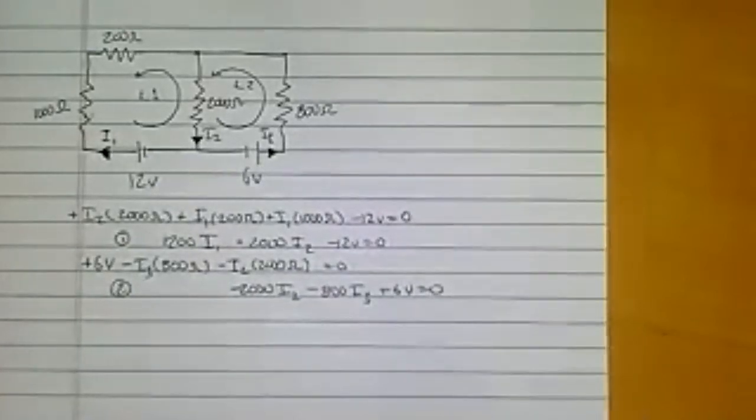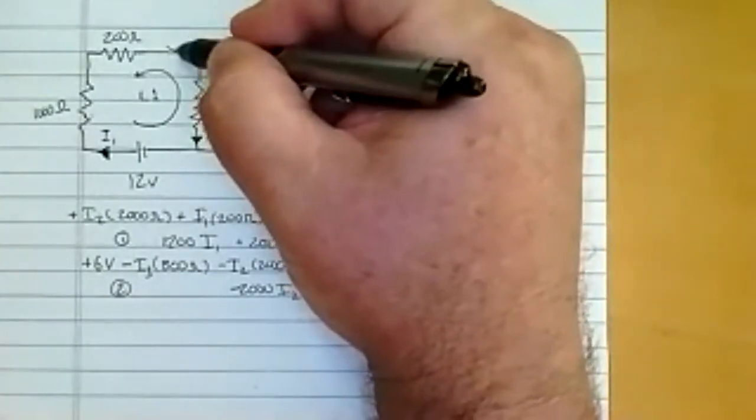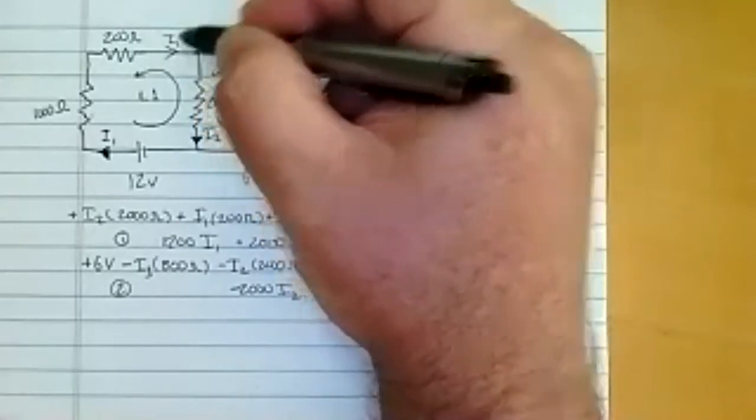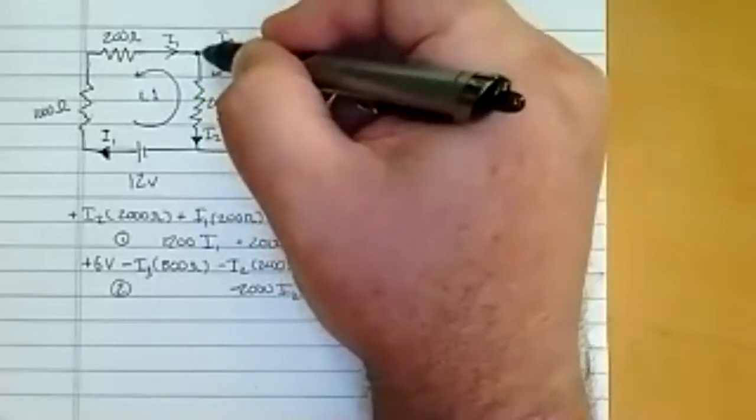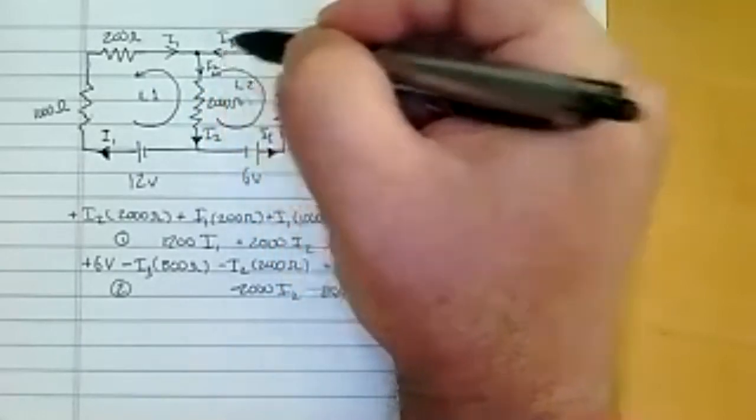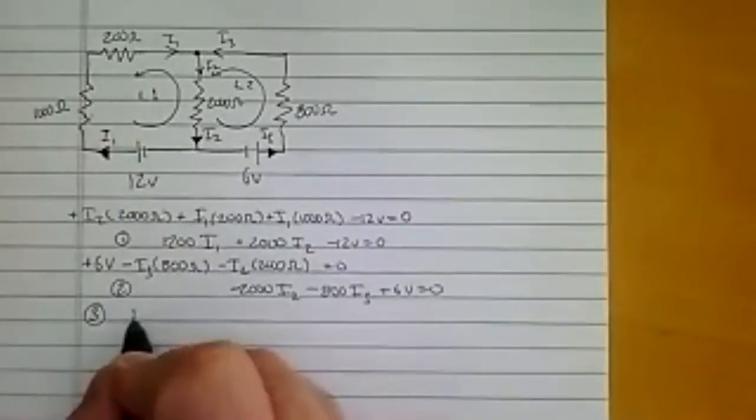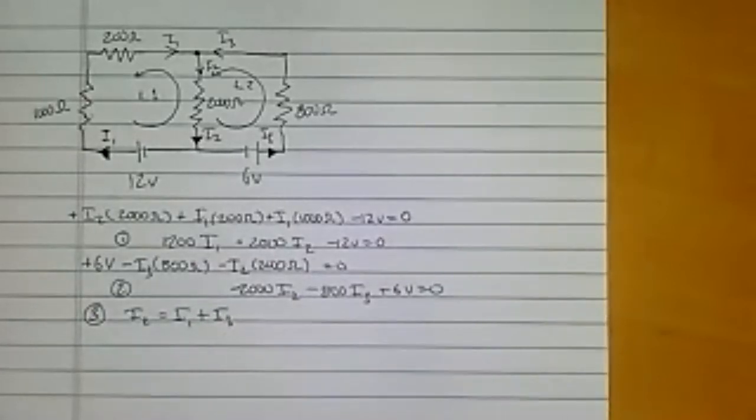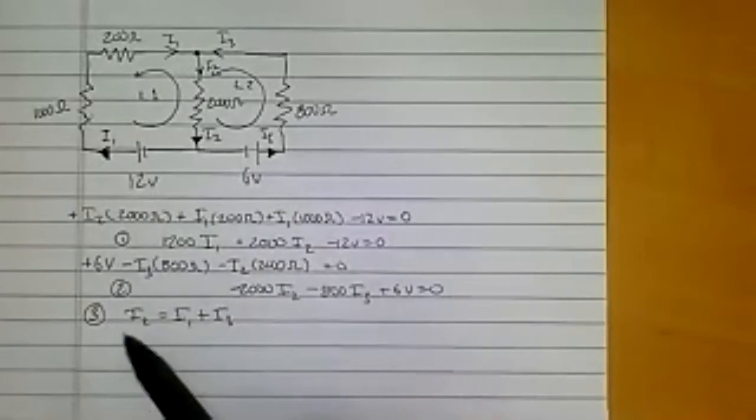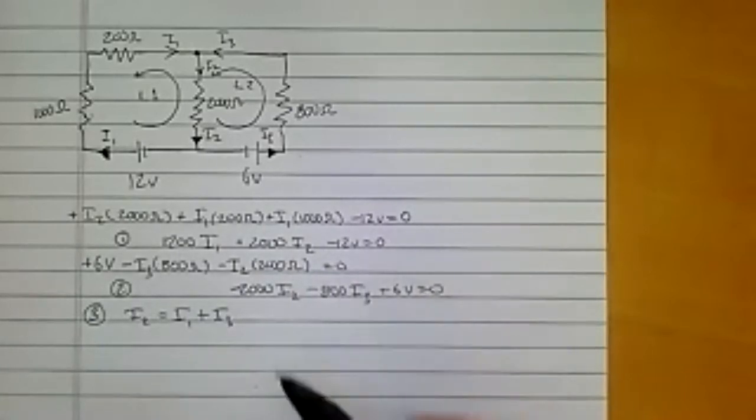I'm going to clean this up a little bit. I'm going to say that in this case it is negative 2000 I2, notice I dropped the ohms again, minus 800 I3 plus 6 volts is equal to zero and I'm calling that equation two. Now if I look up here at the junction I have a current I1 coming in and a current I3 coming into the junction and then a current I2 leaving. So Kirchhoff's junction rule says, here's equation three, that I2 is equal to I1 plus I3.